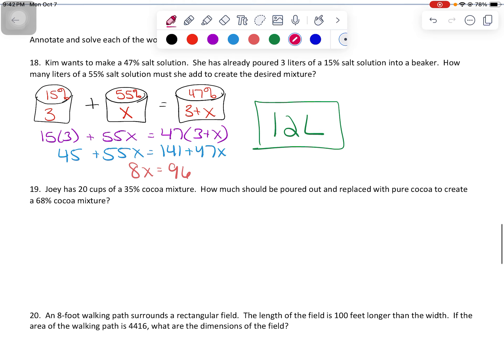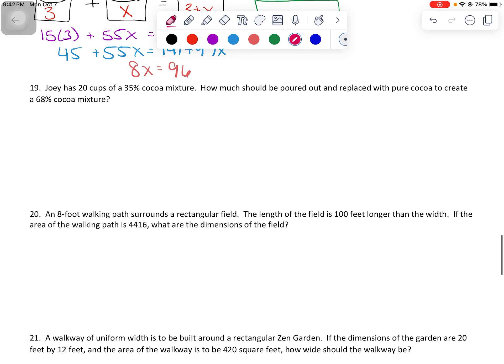I'm going to slide on up to number 19 here. Another chemical mixture problem. So he has 20 cups of a cocoa mixture. He's going to pour out some of that and replace it to create a cocoa mixture. So 20 cups of a 35% solution. How much should be poured out? Well, what he pours out is also 35%. And the answer is, I don't know how much should be poured out. If I do replacement, though, that's going to be the same quantity.